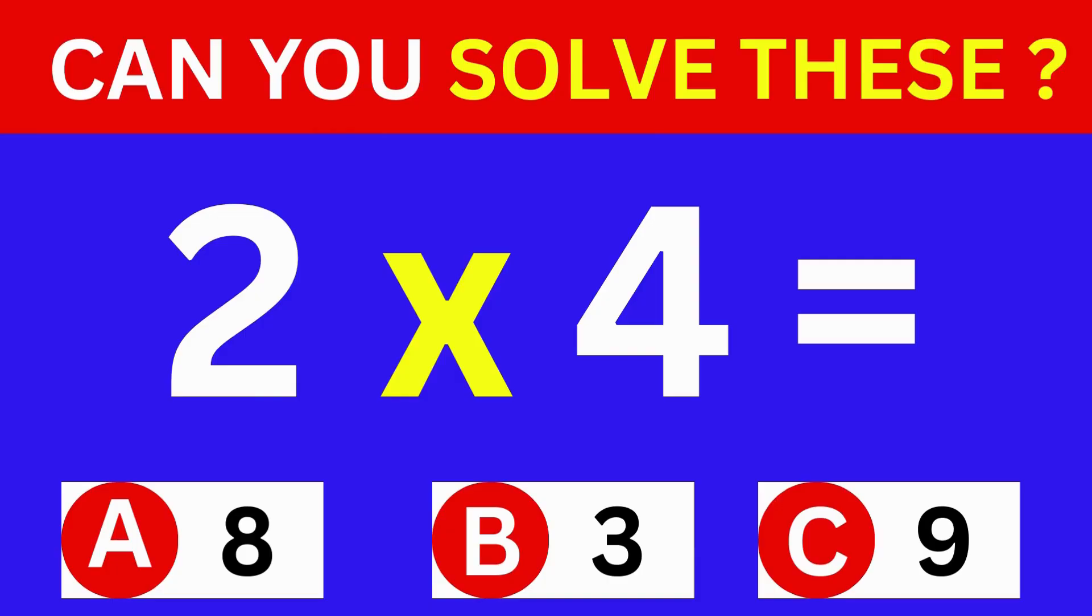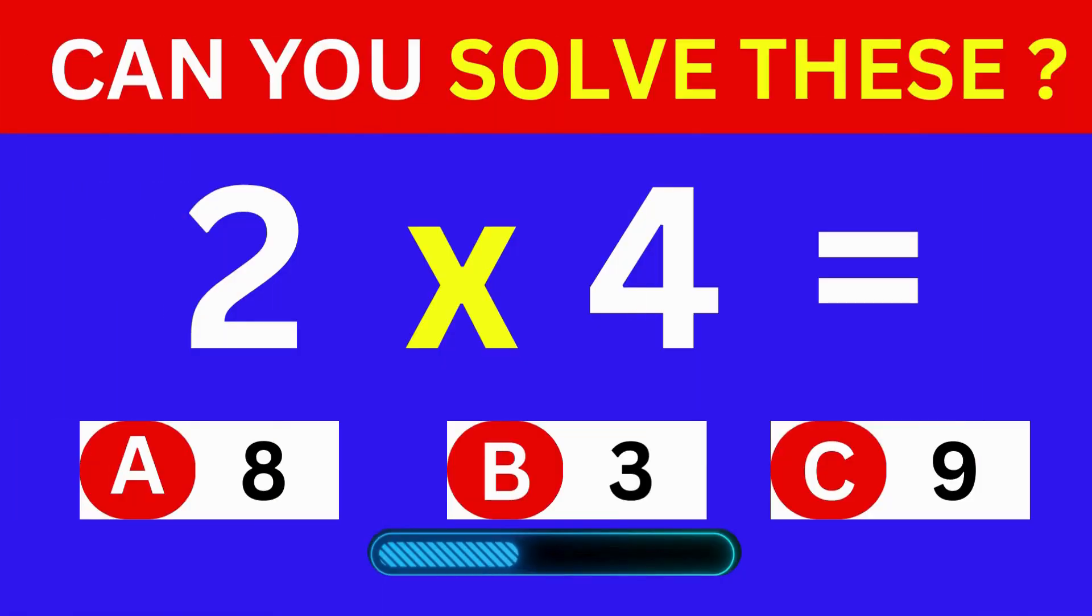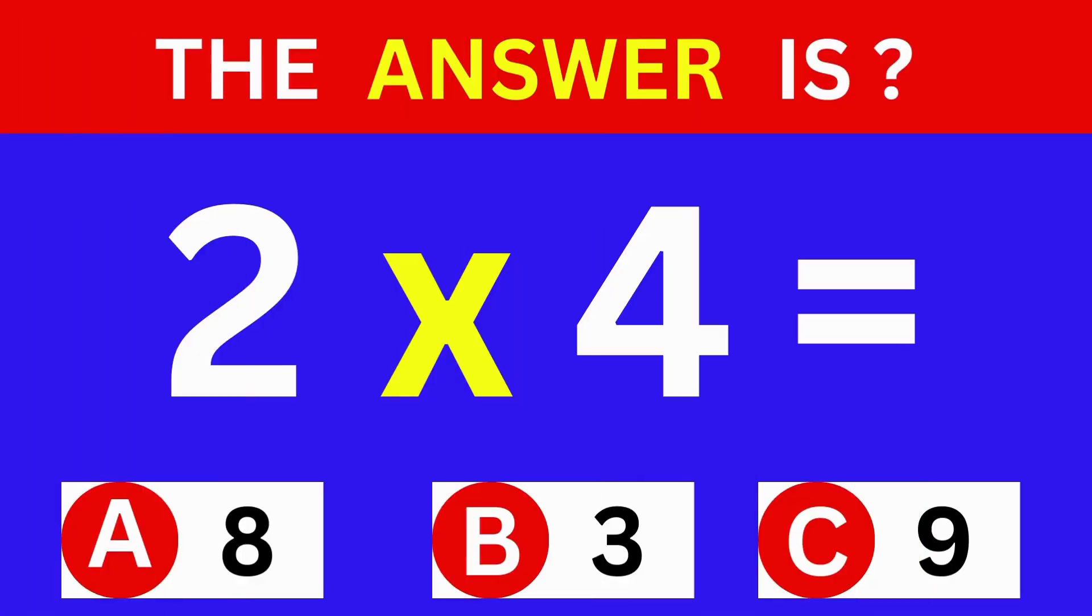2 times 4 equals. A. 8. B. 3. C. 9. The answer is Option A.